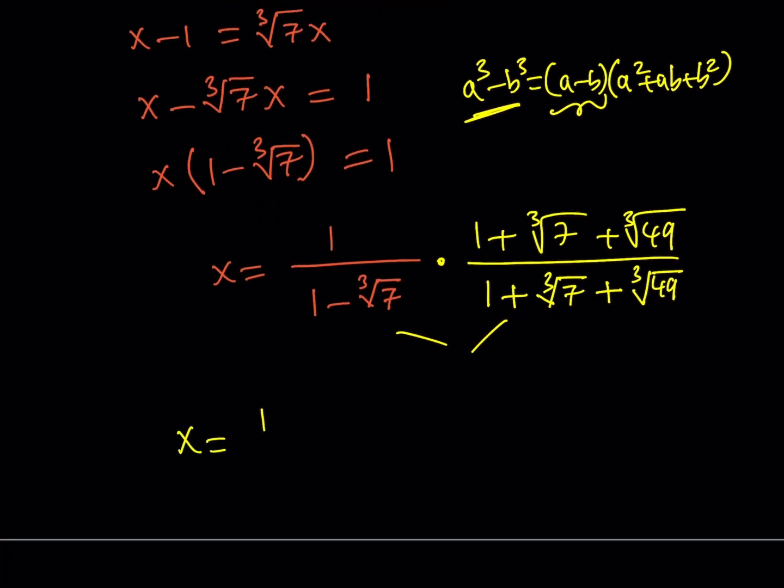Now notice that when we multiply these two things, we're supposed to get the difference of two cubes. So it should equal, the top is going to stay the same, multiply by 1, it's the same thing. And then the bottom one is going to be actually simpler. Because it's going to be 1 cubed minus cube root of 7 cubed, which is 7. So it's going to be 1 minus 7.